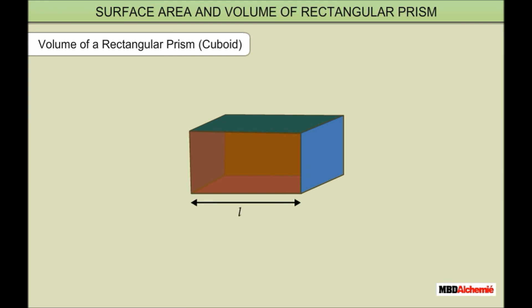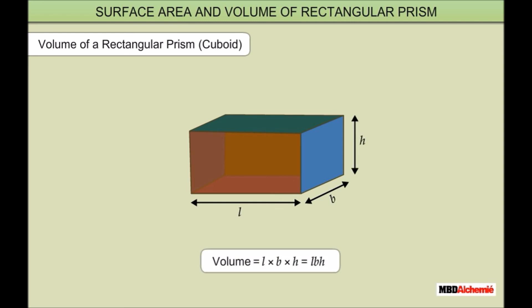Volume of a rectangular prism: let L be its length, B be its breadth, and H be its height. Then its volume equals L×B×H.